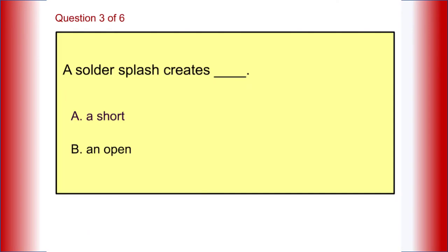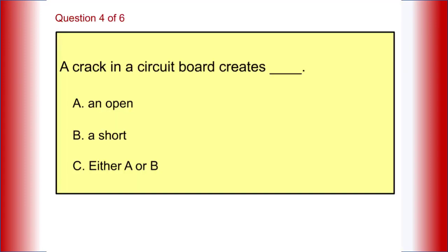A solder splash creates a short or an open? A crack in a circuit board creates: A, an open, B, a short, or C, neither A nor B?